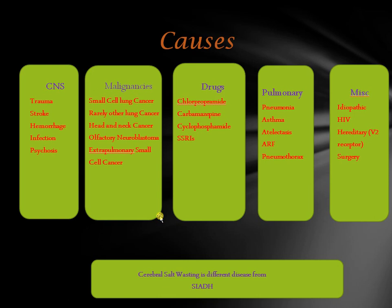Pulmonary causes are very common — especially pneumonias, whether viral, bacterial, or other. Less common pulmonary causes include asthma, atelectasis, acute respiratory failure, and hemothorax. Other causes include idiopathic SIADH, HIV, mutations in V2 receptors causing hereditary SIADH, and post-surgical ADH release due to pain. One important distinction: cerebral salt wasting syndrome, seen in CNS disorders, should not be confused with SIADH. Cerebral salt wasting is due to excessive renal salt loss leading to volume depletion, which then triggers ADH release — unlike SIADH, where hypovolemia is the key feature.